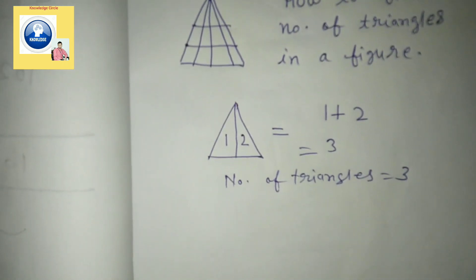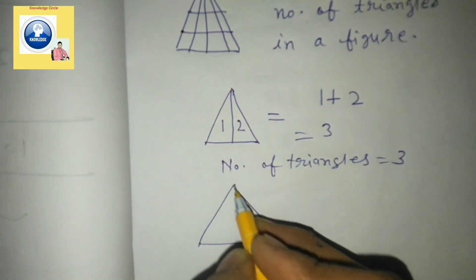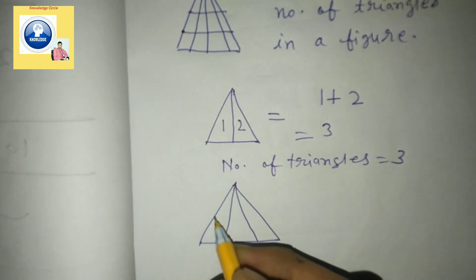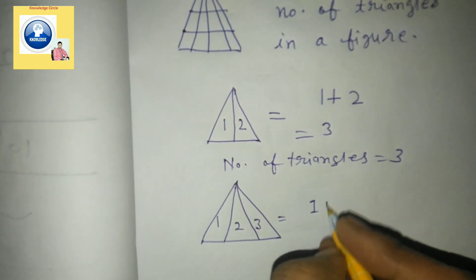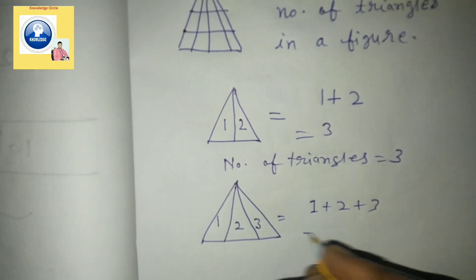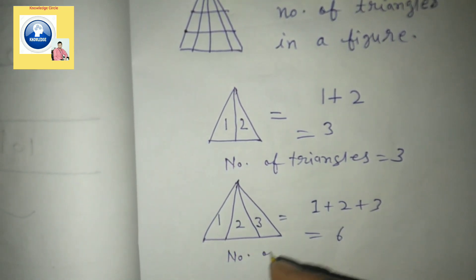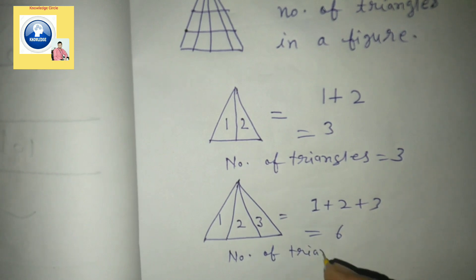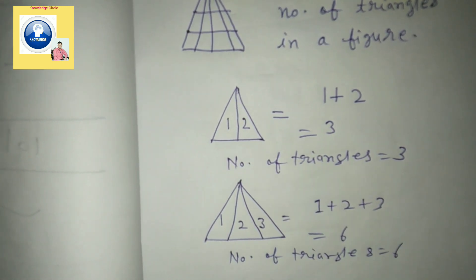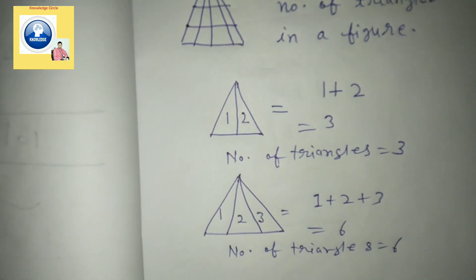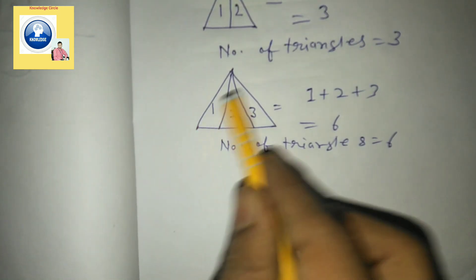Let's try the next figure. Here the triangle is divided into three parts: one, two, three. Add them all: one plus two plus three equals six. So the number of triangles in this figure is six. It's a very useful trick — you don't need to count manually, just write the serial numbers and add them all.